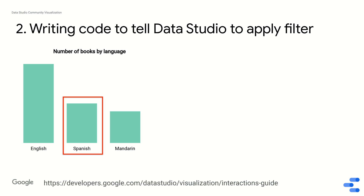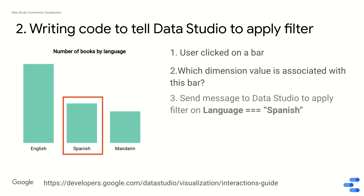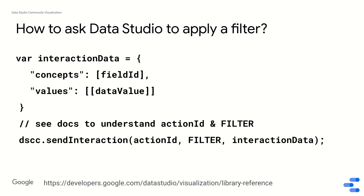What does it look like to write code to tell Data Studio to apply a filter? Let's say I have a bar chart — number of books by language — and the user has selected the bar that corresponds to Spanish language books. The visualization has to figure out which dimension value is associated with this bar, and then send a message to Data Studio saying to filter the rest of the dashboard by language equals Spanish.